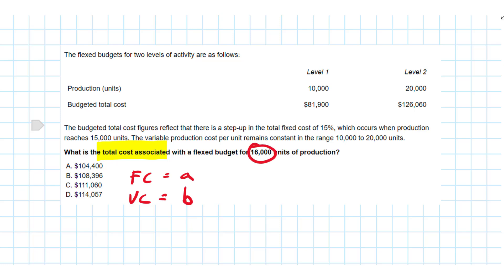16,000, that's above the stepped cost point, isn't it? So what we'll do at the end is multiply the a times 1.15, the b times 16,000. We'll add those together and we will have a total cost.